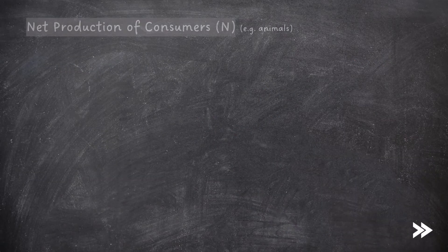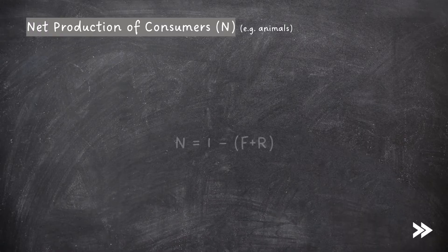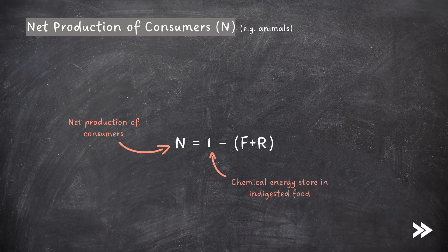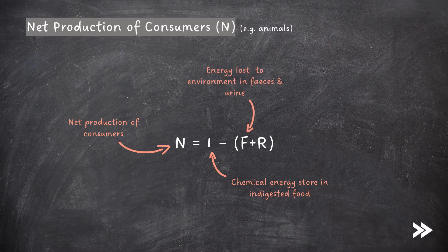The net production of consumers, such as animals, can be calculated using the formula N = I − (F + R), where N is the net production of consumers, I is the chemical energy store in ingested food, F is the energy lost to the environment in faeces and urine, and R is the respiratory losses to the environment.